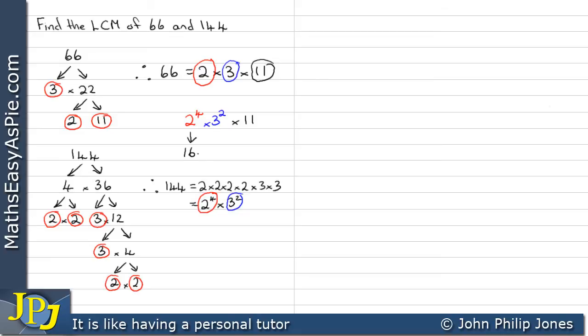Now, of course, this is 16, this is 9, and this is 11. Now, when you multiply that together, you get 1584. So the lowest common multiple of 66 and 144 is 1,584.